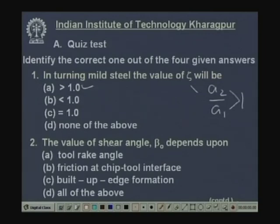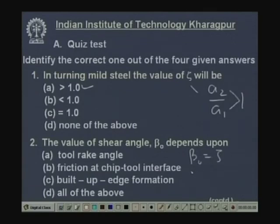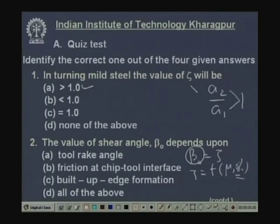Quiz question 2: The shear angle β₀ depends upon — tool rake angle, friction at chip-tool interface, built-up edge formation, or all of the above? The correct answer is all of the above: β₀ depends on zeta, zeta depends on rake angle and friction (μ), and built-up edge formation changes the effective rake angle.